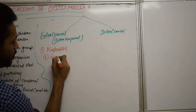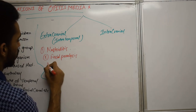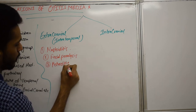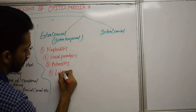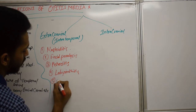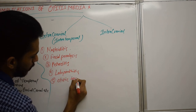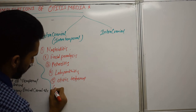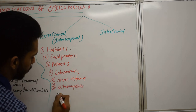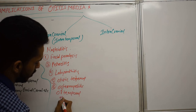The extracranial complications include: first, acute mastoiditis, which we are going to discuss today; second, facial paralysis; third, petrocytis; fourth, labyrinthitis; fifth, autogenic or otogenic tetanus; and last, osteomyelitis of the temporal bone.